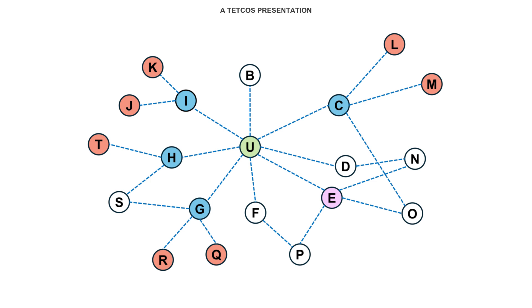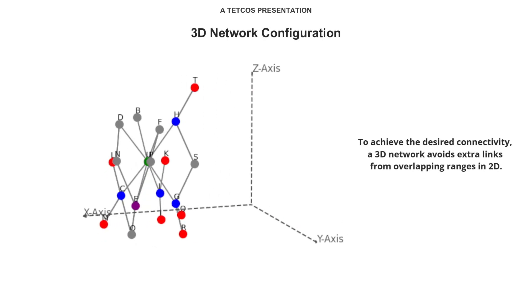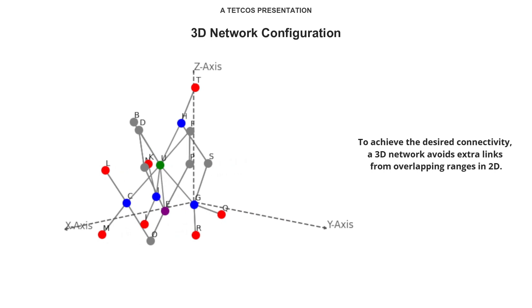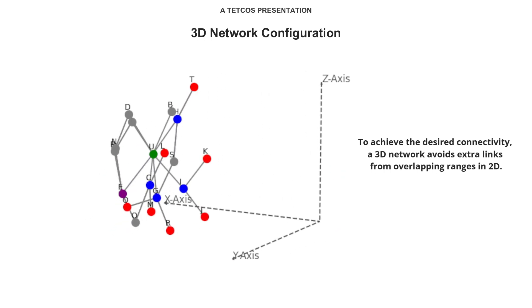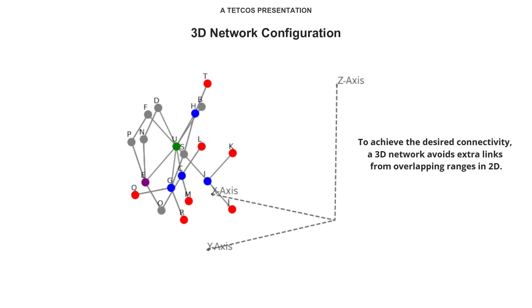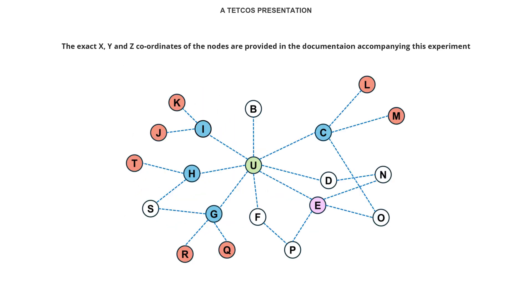The network described has a unique spatial configuration where specific nodes have limited and defined connectivity ranges to ensure they only connect with specified neighbors. Achieving these neighbor relationships is not possible in 2D due to overlapping ranges that may connect additional nodes. By using a 3D network configuration, we can meet the connectivity constraints described. The exact X, Y, and Z coordinates of the nodes are provided in the documentation accompanying this experiment.